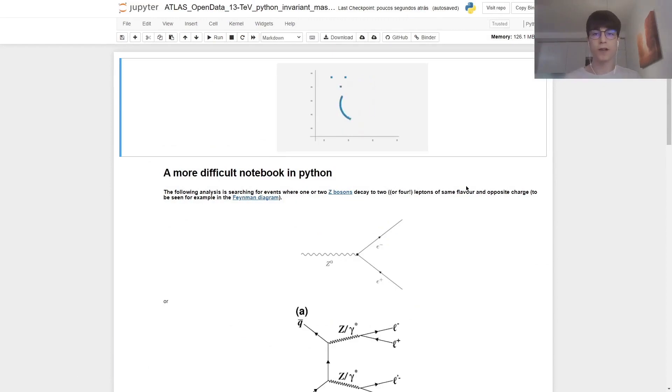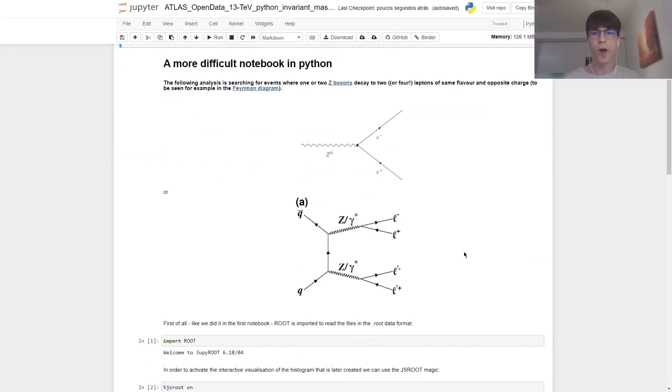Before we go to the code itself, let's look at the physical phenomenon we're dealing with. Here we have a Feynman diagram of a Z boson stationary in space, but moving through time, decaying at the same time into two particles, an electron and a positron. As we can see, charge is conserved since the positive and negative charge cancel each other, and before we also had a neutral charge. We also see a different example of decay, but what matters here is that our Z boson is decaying into two or four leptons of the same flavor, but of different charges.